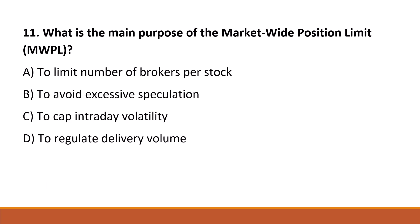What is the main purpose of the market-wide position limit? Option A: to limit number of brokers per stock. Option B: to avoid excessive speculation. Option C: to cap intraday volatility. Option D: to regulate delivery volume. The correct answer is Option B, to avoid excessive speculation.